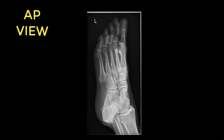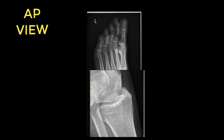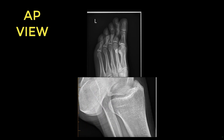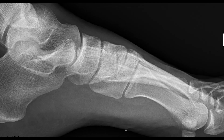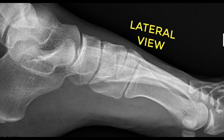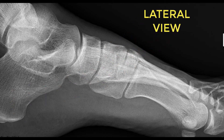Just proximal to the ankle joint, you have the leg bones: the tibia as the bigger bone and the fibula as the smaller bone. Now the other view to know is the lateral view.